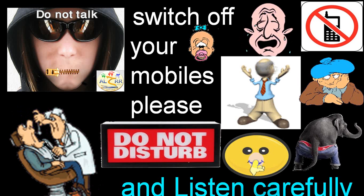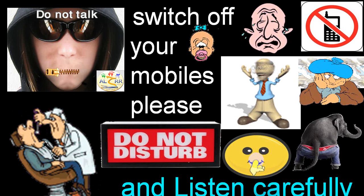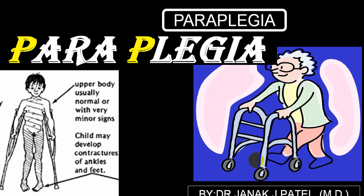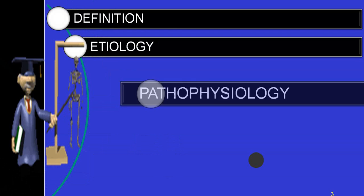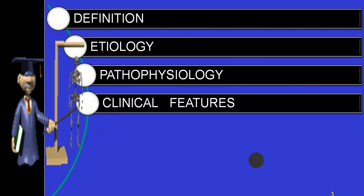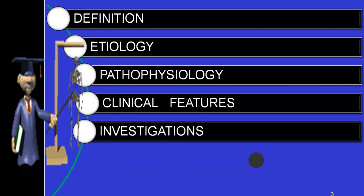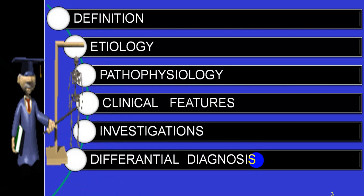Paraplegia means motor weakness. 'Plegia' means full or total motor weakness, and 'para' means both lower limbs. When there is weakness in both lower limbs and it is a full motor weakness, we call it paraplegia. When there is partial weakness, we call it paraparesis. These disorders are more common in children than in adults.